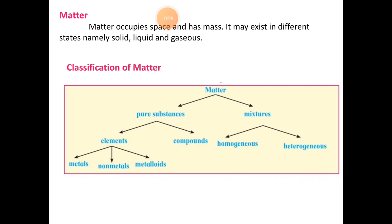Pure substances are divided again into two parts: elements and compounds. Elements are pure substances which cannot be broken down into similar substances by ordinary chemical change. The properties of elements are always the same — even if we divide them into smaller particles, the properties remain the same. Elements are further divided into three parts: metals, non-metals, and metalloids.